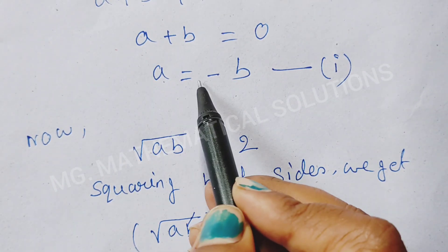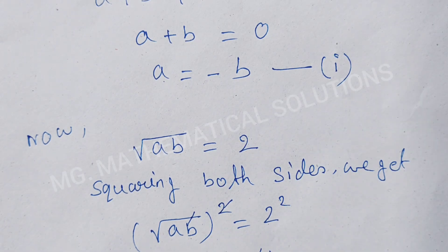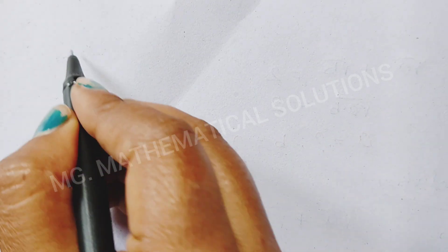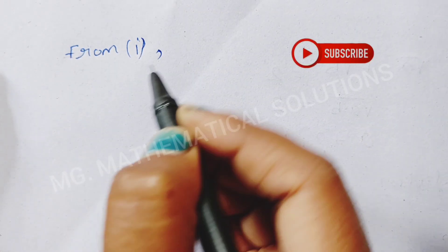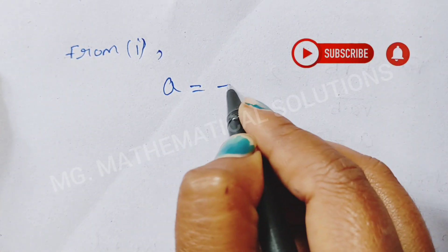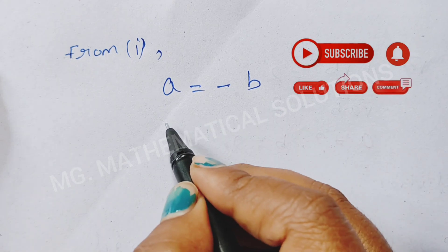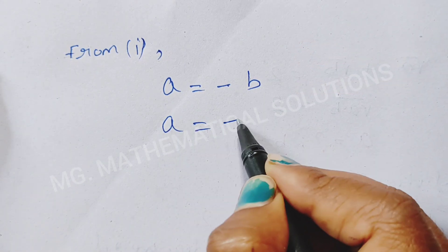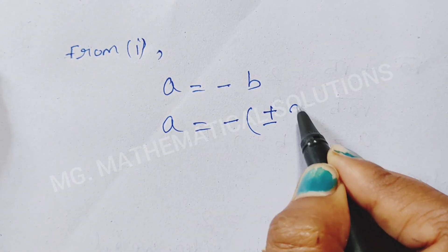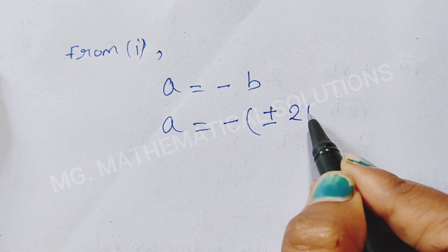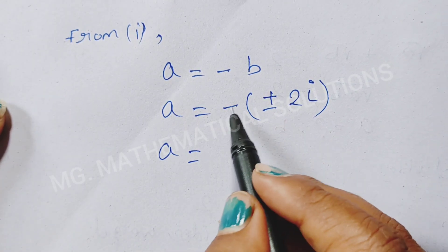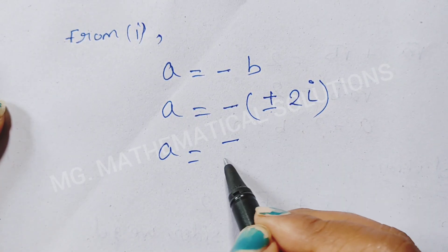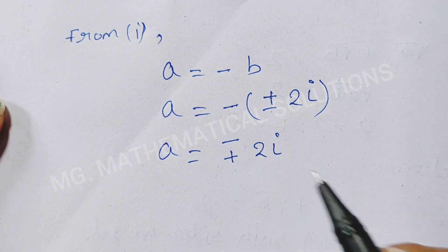Now we find the value of a. Since a equal to minus b, we get a equal to minus (plus or minus 2 iota), which gives a equal to minus 2 iota or plus 2 iota.